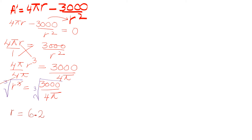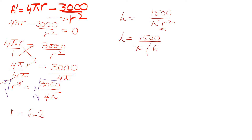Now substitute the value of r into the height equation h equals 1500 divided by πr². Substituting r equals 6.2 and squaring it, you get h equals 1500 divided by π times 6.2 squared, which gives h approximately equal to 12.42 centimeters. The radius is similarly expressed in centimeters.